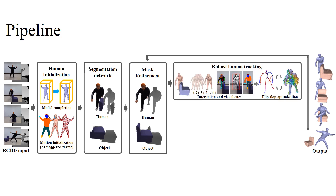Followed by a robust human tracking scheme with various cues, including a spatial relation prior to prevent physically implausible intersections, the data-driven interaction cues to maintain natural motions, and human pose, shape, and parsing priors.